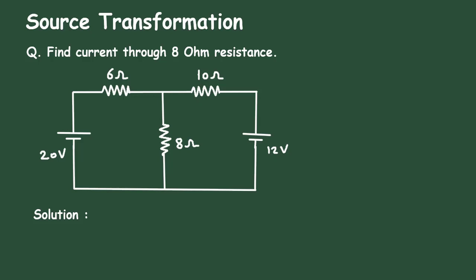To get the free notes of electrical circuits, check the link in the comment section and install the app for free. Source transformation. Find current through 8 ohm resistance by using source transformation technique.